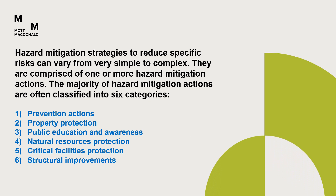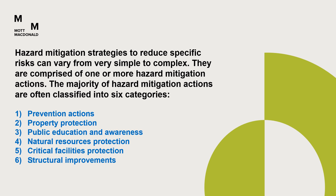Hazard mitigation strategies to reduce specific risk can vary from very simple to complex. They are comprised of one or more hazard mitigation actions. The majority of hazard mitigation actions are often classified into six categories: one, prevention actions; two, property protection; three, public education and awareness; four, natural resource protection; five, critical facilities protection; and six, structural improvements.